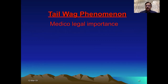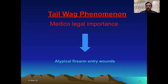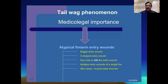The medical importance of tail wag is that it produces atypical forms of entry wounds. When the bullet is in the initial or terminal wobbling phase, it is unstable and will produce atypical types of wounds. The wound can be bigger, X-shaped, or when it strikes laterally it will show a keyhole type of entry wound. Or if the bullet passes through another medium, the glass or metal may cause fragmentation, resulting in multiple entry wounds.